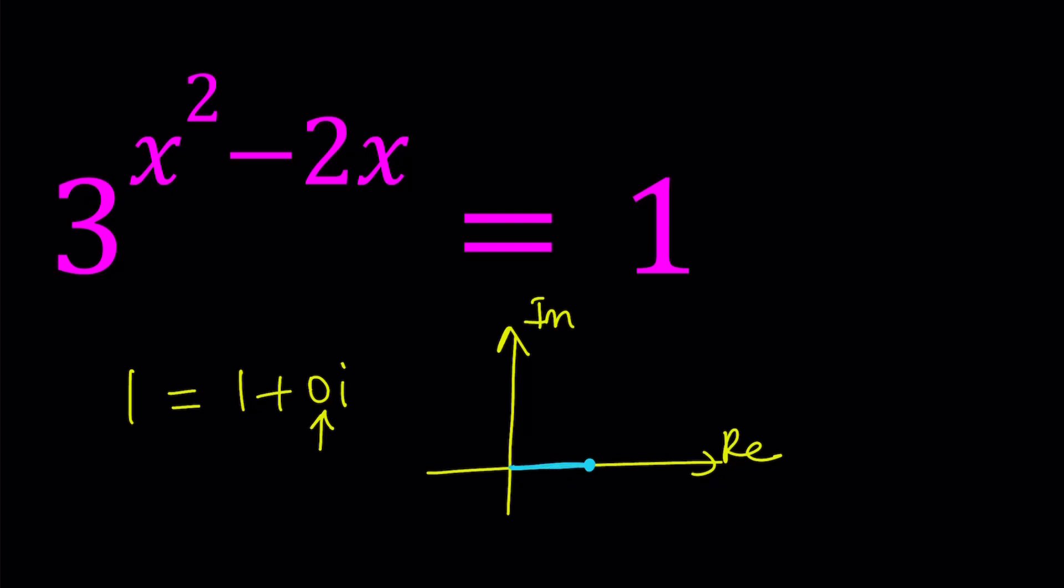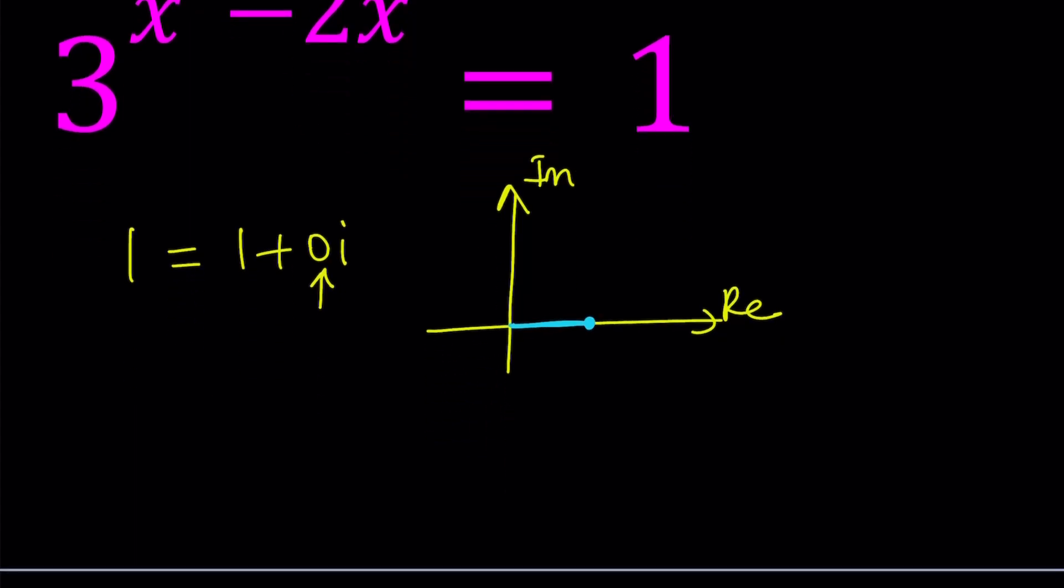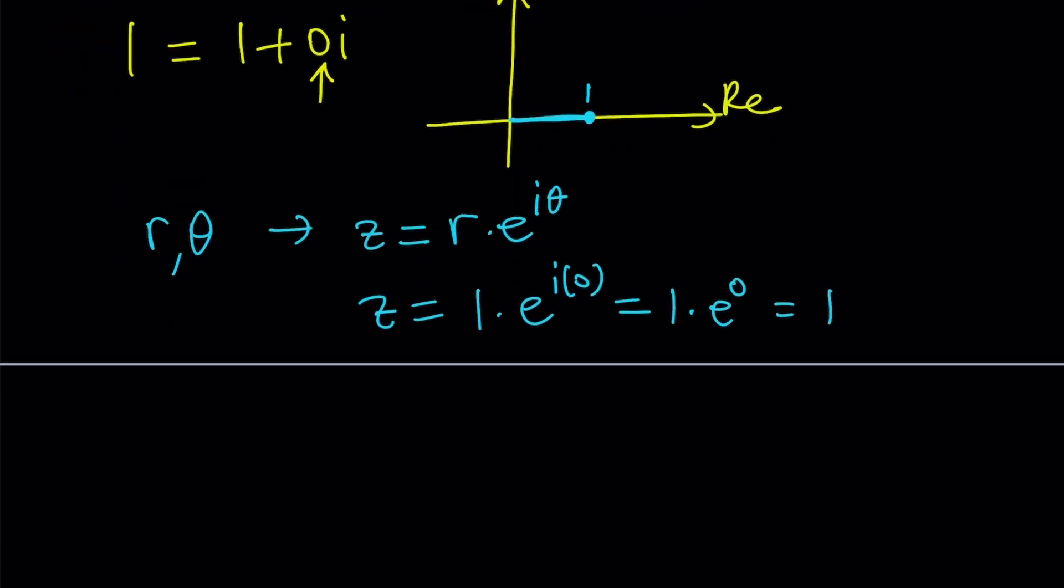So that's our number z, which we are trying to write in polar form. We need r and theta to be able to write something in polar form, then you can write it as z equals r times e to the power i theta. Notice that r is equal to 1 in this case, because its distance from 0 is 1, and theta is going to be 0 degrees. But obviously, you don't want to write it with 0 degrees, because that would just be 1 times e to the power 0, which is 1. It's not really going to help you much.